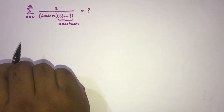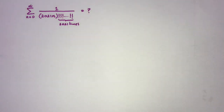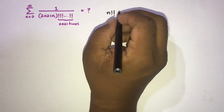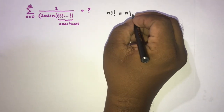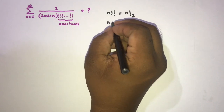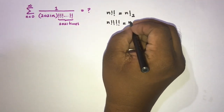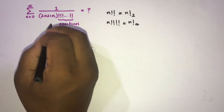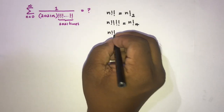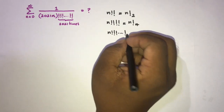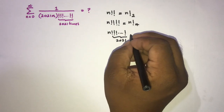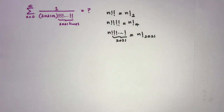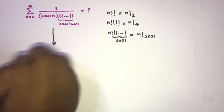Before solving the question, I'm going to introduce a notation. If we take n factorial two times we can write (n factorial) squared. If we take n factorial four times we can write (n factorial) to the fourth. So in our question, n factorial is repeated 2021 times, and we can write it as (n factorial) to the 2021.